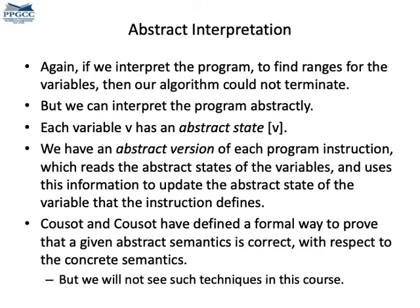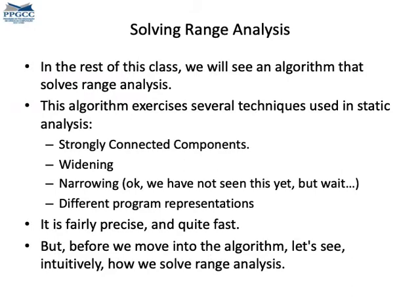This idea of widening is the cornerstone of something called abstract interpretation — basically a way to interpret the program assigning abstract values to variables in a way that is always guaranteed to terminate. When lattices have finite height, simple data flow or constraint-based analysis already ensures termination; in the face of a lattice of infinite height, we need widening. In the next classes, we shall see how to solve range analysis, revisiting several techniques we have already seen, plus a few more — namely widening and something called narrowing.